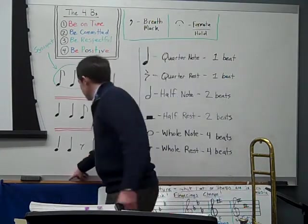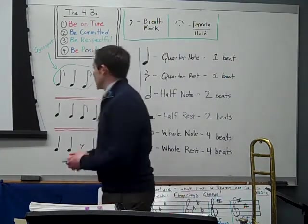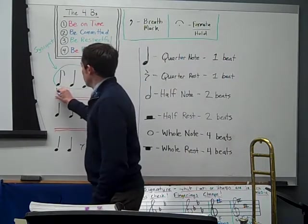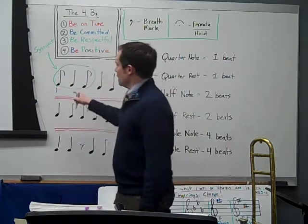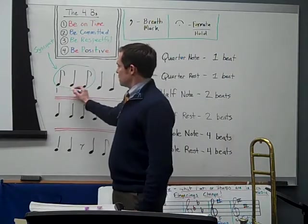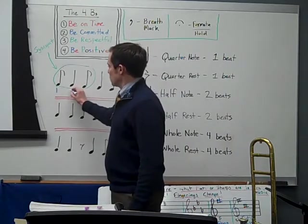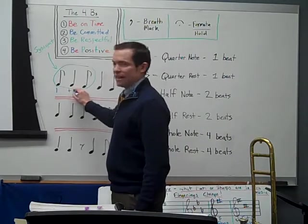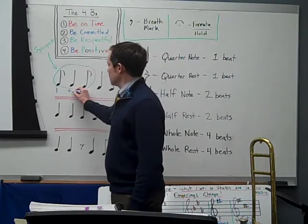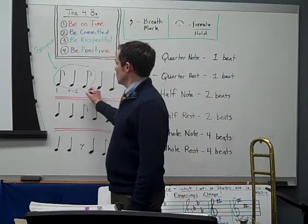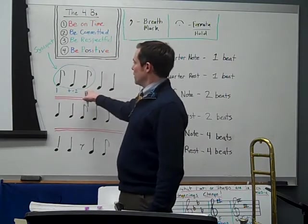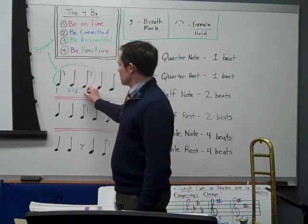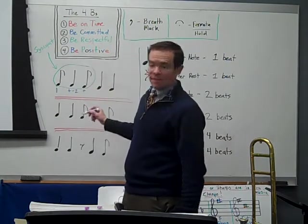Here's how we write syncopate. We start every measure with one, so we'll go ahead and put one there. Now this only gets half a beat, so this quarter note starts on the and. So we write: and, dash, two, and then we still have a little bit of a beat left, so this is going to be on the and.